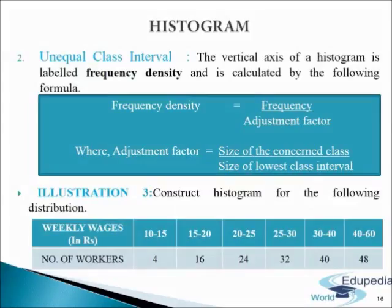Histogram of unequal class intervals is the one based on data with unequal class intervals. When the data of class intervals are unequal, the width of the rectangles would be different. The width of the rectangles would increase or decrease depending upon the increase or decrease in the size of the class intervals. Before presenting the data in the form of graphs, frequencies of unequal class intervals are adjusted. Height of rectangle will depend on adjusted frequencies. Frequencies are adjusted according to the formula: frequency density equals frequency divided by adjustment factor, where adjustment factor equals size of the concerned class divided by size of the lowest class interval. Let us understand this with the help of the following illustration.